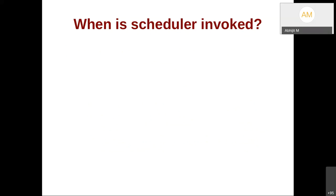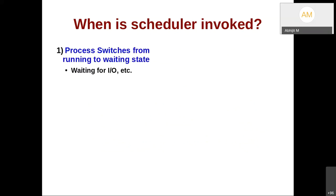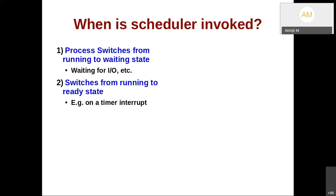Let us revise when the scheduler is invoked. First, the scheduler is invoked when a process switches from the running state to the waiting state — for example, as part of a system call when some IO is going to happen. We have seen this code in Xv6: the code goes to the buffer cache, then the disk device driver, and from there the process gets suspended and moves to the wait queue. Whenever the process is moved to the wait queue it calls the scheduler. Second, the scheduler is invoked when a process switches from running to ready state — that is when you get a timer interrupt. We have seen this code as well: from trap to yield and yield to sched.